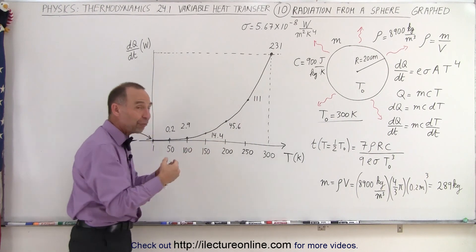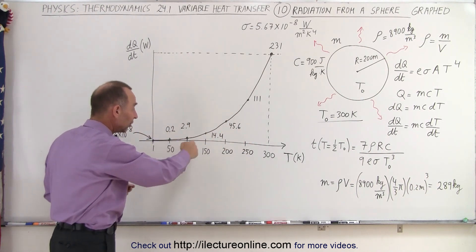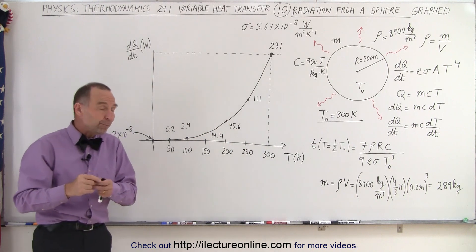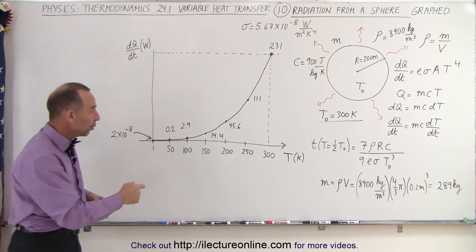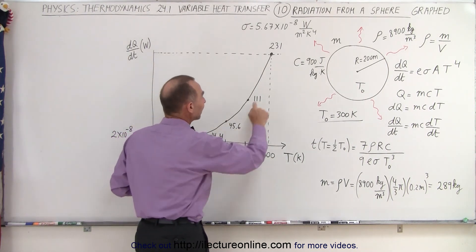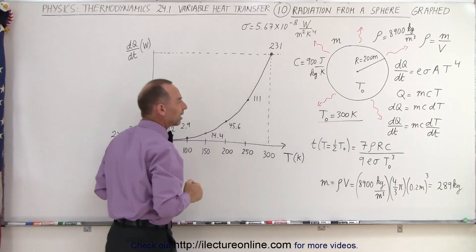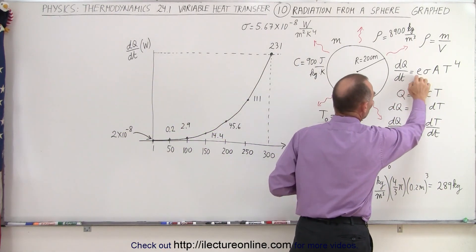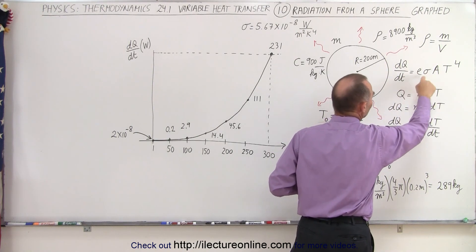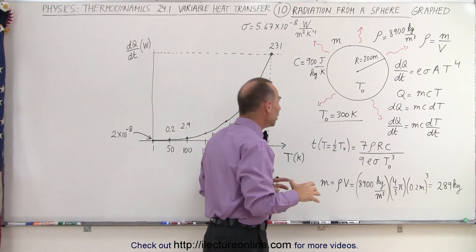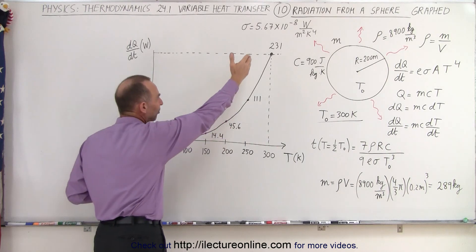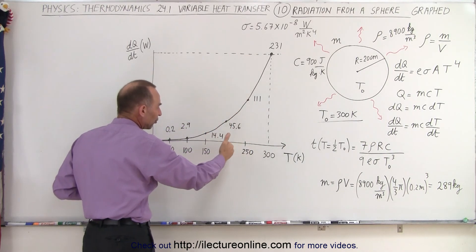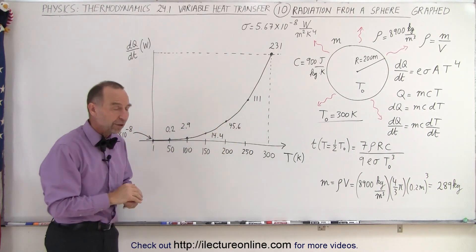And at 150 Kelvin, the halfway point between 300 and zero, it would be down to 14.4 joules per second, which is way less than what it started with at 300 Kelvin. So you can see that this equation, the Stefan-Boltzmann equation, where the amount of heat being radiated is a function of T to the fourth power, you can see that it drops very fast as the temperature diminishes down to lower temperatures.